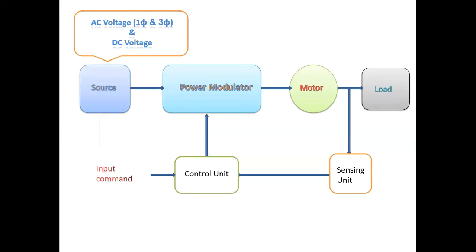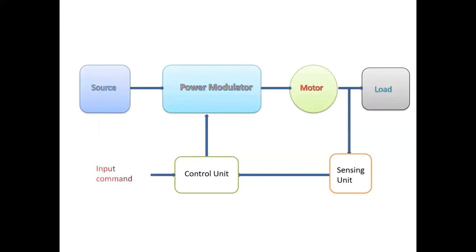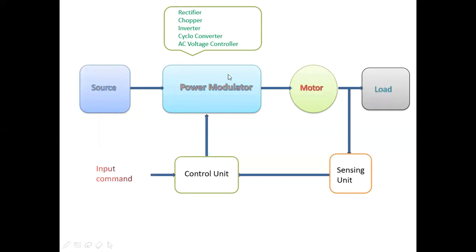Next, the power modulator. The power modulator is the interface between the source and the motor. In the power modulator, converters are used — specifically semiconductor converters. Semiconductor devices used include SCRs, transistors, IGBTs, and MOSFETs.